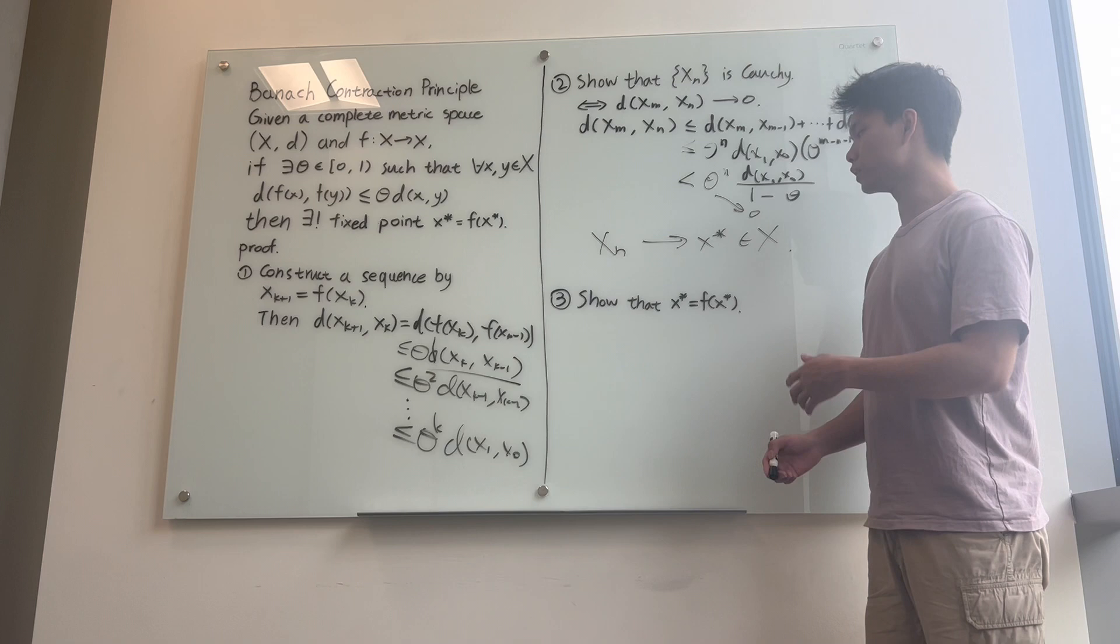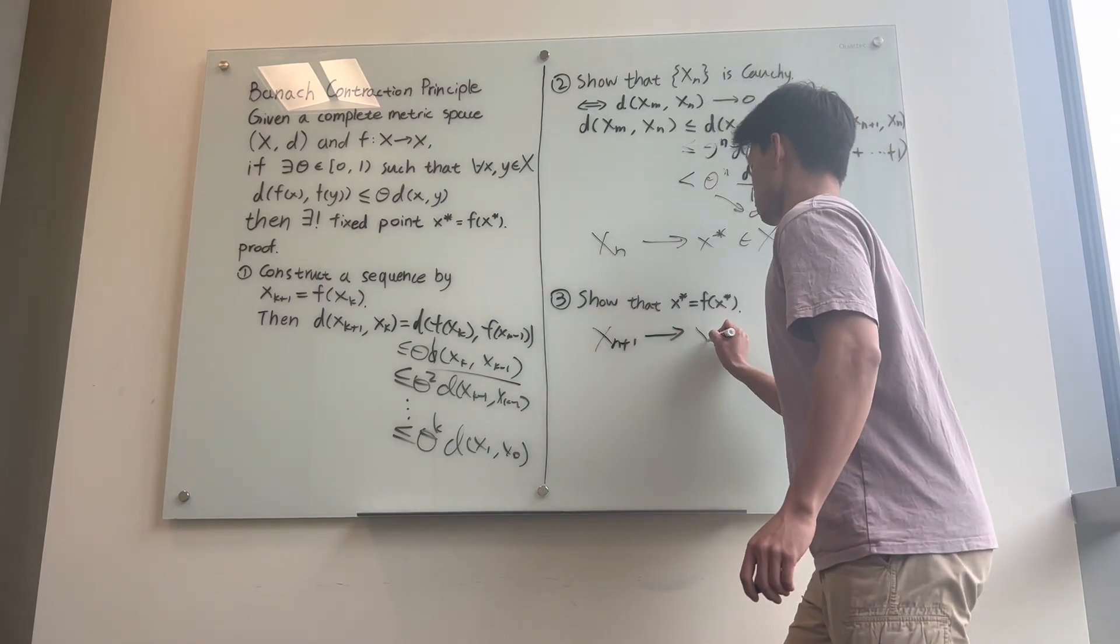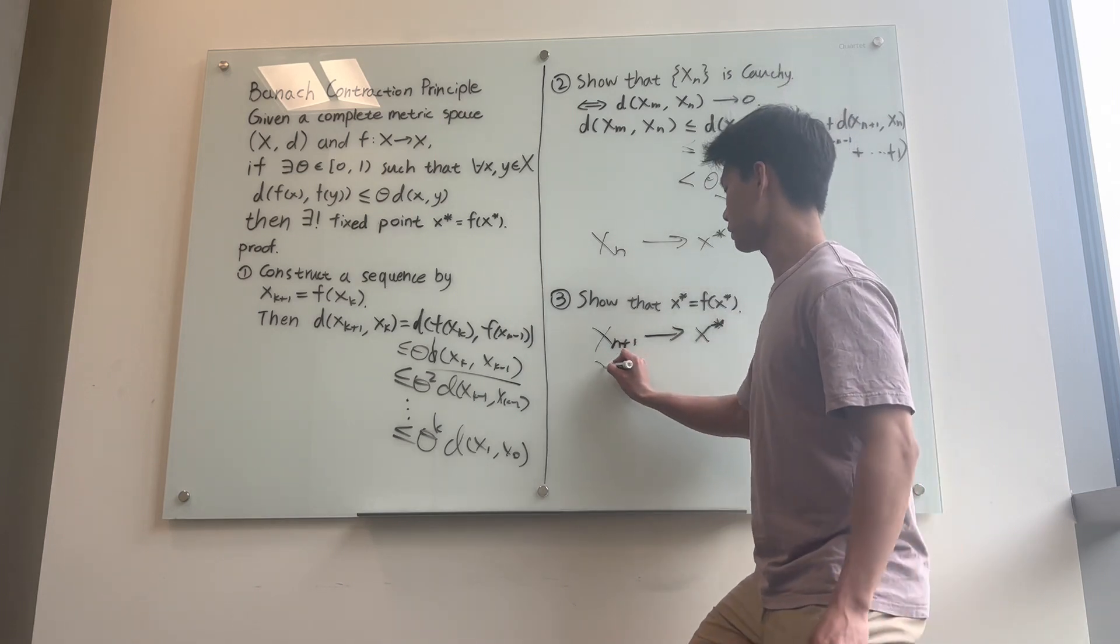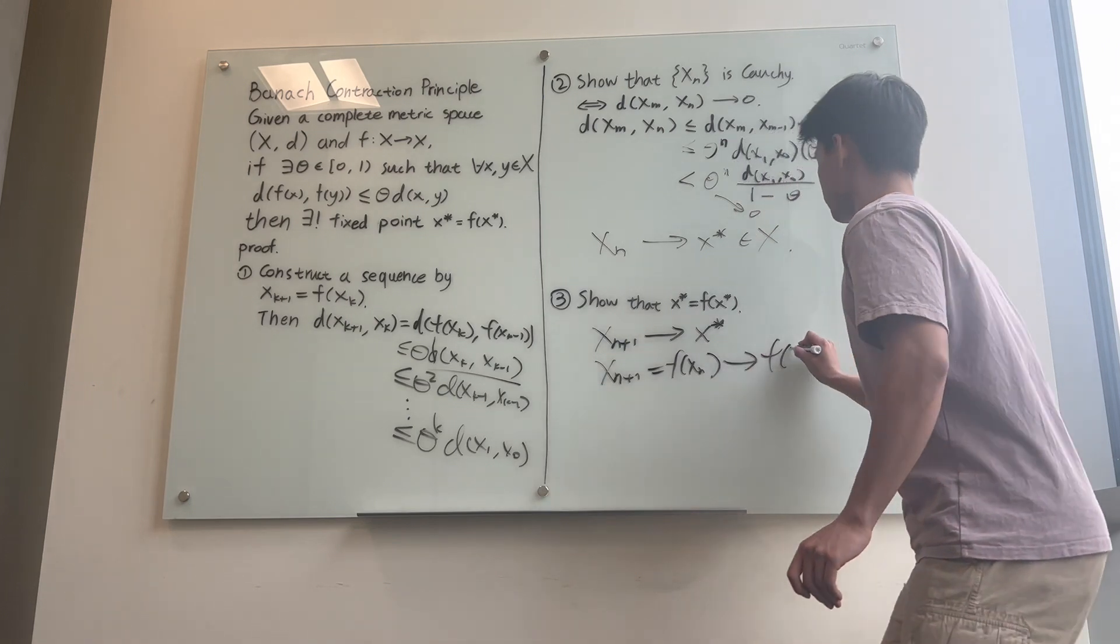Finally, we're going to show that the limit point is the fixed point we want. To do that, we first notice x_{n+1} converges to x*. On the other hand, x_{n+1} equals f(x_n), which converges to f(x*),